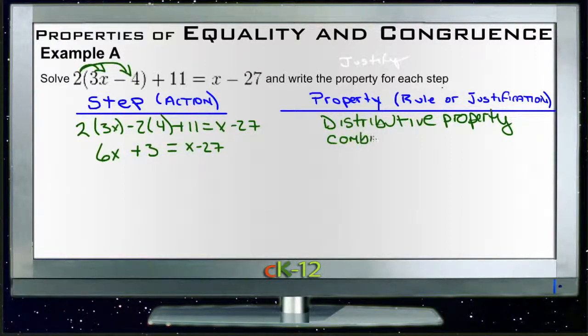And then our next step would be to get rid of the 3 on this side, the left-hand side, because we have more variables over here, so we'll collect our variables on that side. So we'll subtract 3 from each side, giving us 6x = x - 30, and that would be the subtraction property of equality.